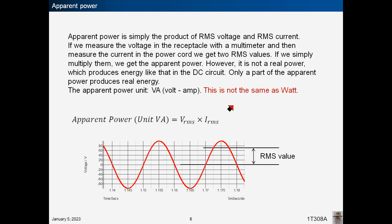Apparent power is simply the product of RMS voltage and RMS current. If we measure the voltage in the receptacle with the multimeter, and then measure the current in the power cord, we get two RMS values. If we simply multiply them, we get the apparent power. However, it is not a real power, which produces energy like that in the DC circuit. Only part of the apparent power produces real energy. The unit for apparent power is volt amp, which is not the same as watt.